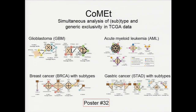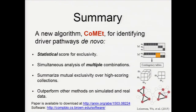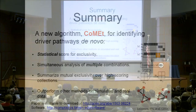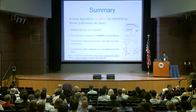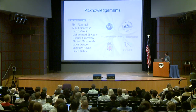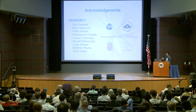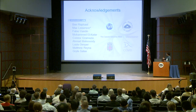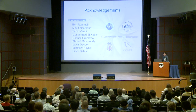I don't have time to go through all the datasets we ran. I encourage you to go to poster 32, where we also ran AML and gastric cancer with subtypes. To summarize, we have a new scoring function, we simultaneously analyze multiple combinations, and we summarize results over high-scoring collections, outperforming other methods on simulated and real data. I encourage you to download the paper and the software to run the 2^K contingency table test. I would like to thank my advisor Ben Raphael, collaborator Max Leiserson who has equal contribution, Fabio Vandin, and other lab members.